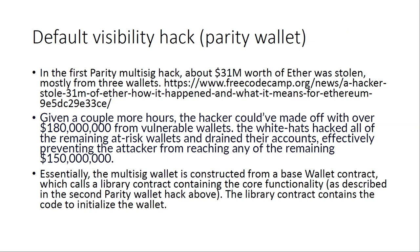Default visibility hacks and attacks and vulnerabilities have cost a lot of money to be stolen. One example is the first Parity Wallet multi-signature hack, where about $30 million worth of Ethereum was stolen from three wallets.